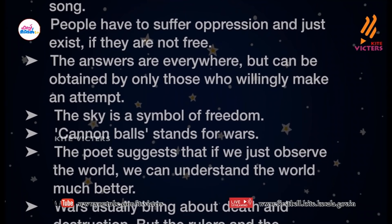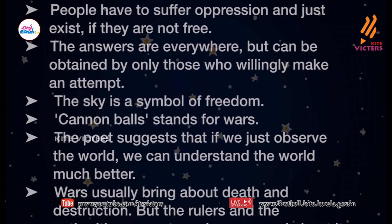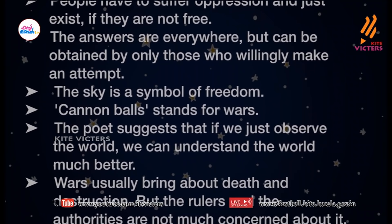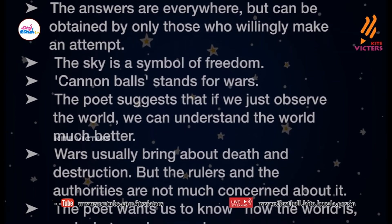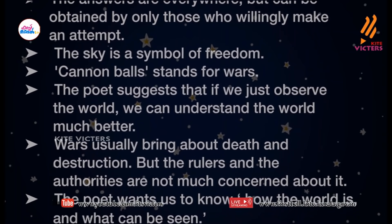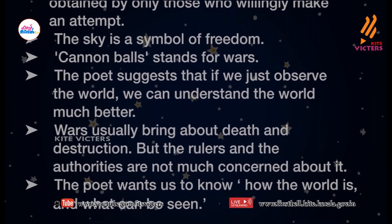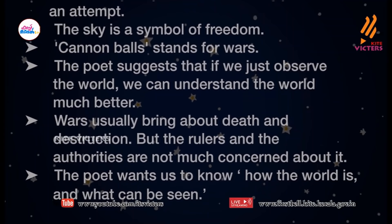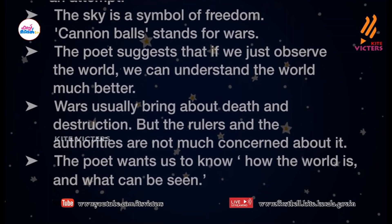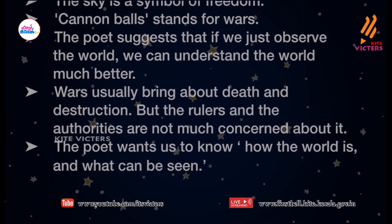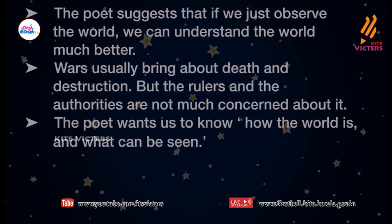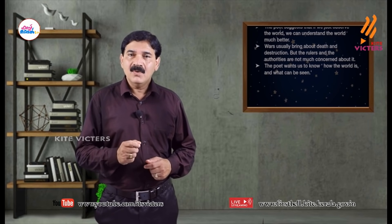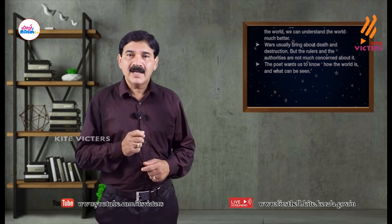The poet criticizes those who turn their heads and pretend not to see the injustice and denial of civil rights. The dove stands for freedom and peace. It is an anti-war song and an anti-political song. People have to suffer oppression and just exist if they are not free. The answers are everywhere but can be obtained only by those who willingly make an attempt. The sky is a symbol of freedom. Cannonballs stand for wars. The poet suggests that if we just observe the world, we can understand it much better.